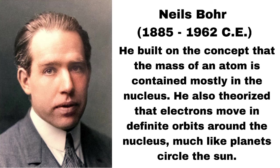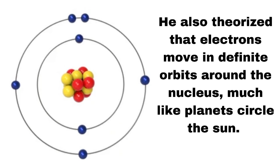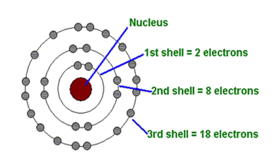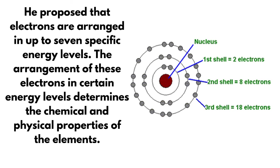In 1913, the Danish scientist Niels Bohr proposed an improvement. He built on the concept that the mass of an atom is contained mostly in the nucleus. He also theorized that electrons move in definite orbits around the nucleus, much like planets circle the sun. These orbits, or energy levels, are located at certain distances from the nucleus. He proposed that electrons are arranged in up to seven specific energy levels. The arrangement of these electrons in certain energy levels determines the chemical and physical properties of the elements.